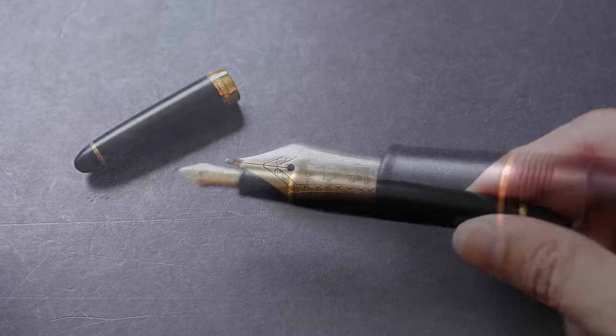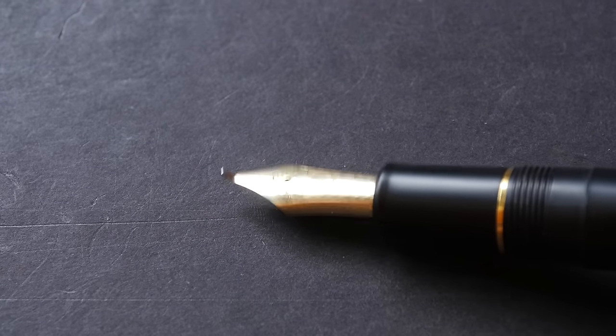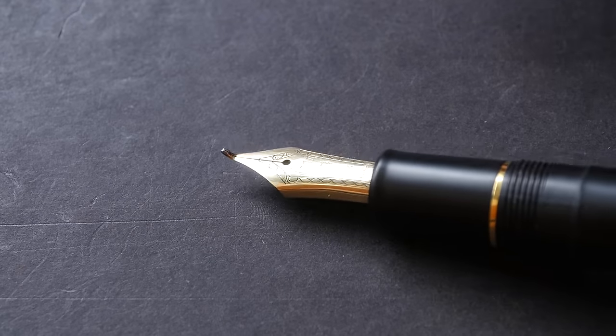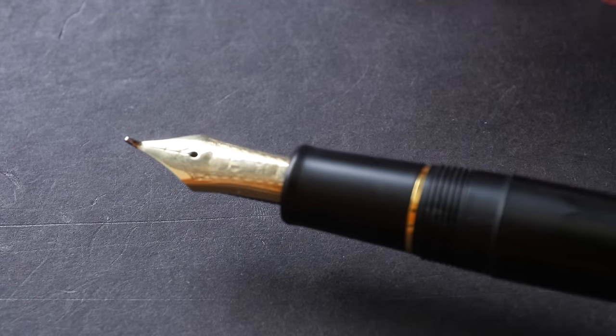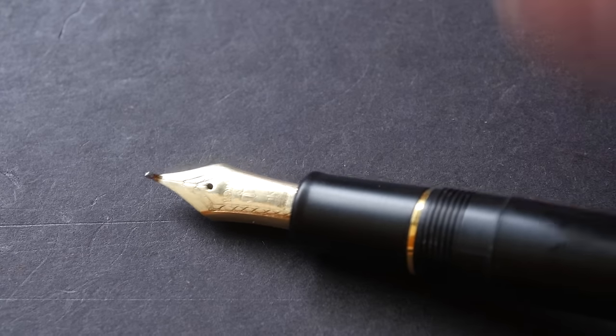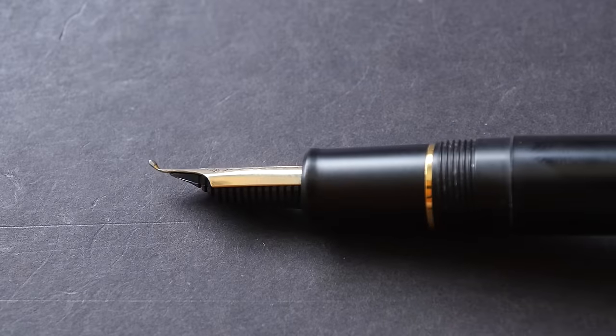Let's take a closer look at the nib. Naginata is actually a Japanese sword, a long sword that consists of a wooden shaft and a curved blade at the end. So in the case for this fountain pen, it means that the nib is very long, that's all. And for fude, fude means that there's a bent section at the back.